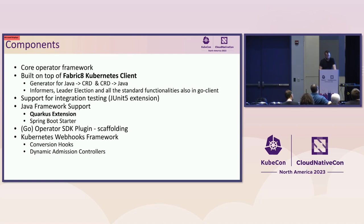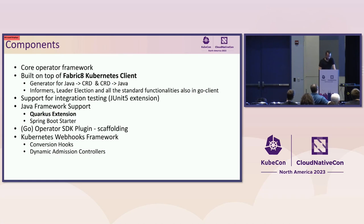The SDK contains a core framework built on top of the Fabric8 Kubernetes client, a Java client that already puts a lot on the table — it supports generating Java classes from custom resource definitions and also the other way around, and has all the facilities of the Go Kubernetes client like informers and leader election. We explicitly support integration testing via a JUnit extension, support for major Java frameworks especially Quarkus and Spring Boot, a plugin for Operator SDK to scaffold projects, and a separate framework for implementing conversion hooks and dynamic admission controllers in Java.